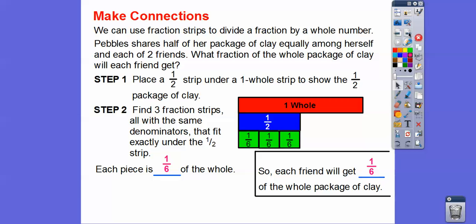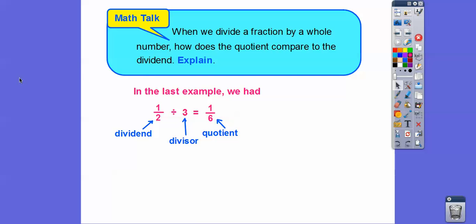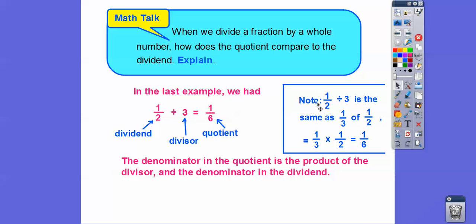When we divide a fraction by a whole number, how does the quotient compare to the dividend? We had one half divided by three, giving us one sixth. The denominator in the quotient is the product of the divisor and the denominator in the dividend: 2 times 3 equals 6. Dividing by three is the same as taking one third of one half — and since 'of' means multiply, one third times one half is one sixth. Alright you guys, I hope that lesson helps. Take care.